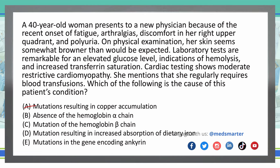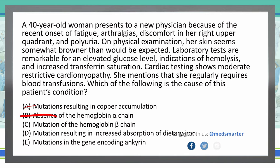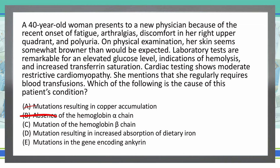Option B: absence of the hemoglobin alpha chain. That is alpha thalassemia. A full absence of the alpha chain is known as hemoglobin Bart's (HB Bart's), which is a severe form of alpha thalassemia. Not having an alpha chain would cause major issues that wouldn't allow you to reach 40 years of age — this is oftentimes intrauterine fetal death. So absence of the alpha chain is not an option. Option C: mutation in the hemoglobin beta chain — that is beta thalassemia, either minor or major. We are seeing hemolysis and ineffective erythropoiesis in this patient, so C could be a possible answer.